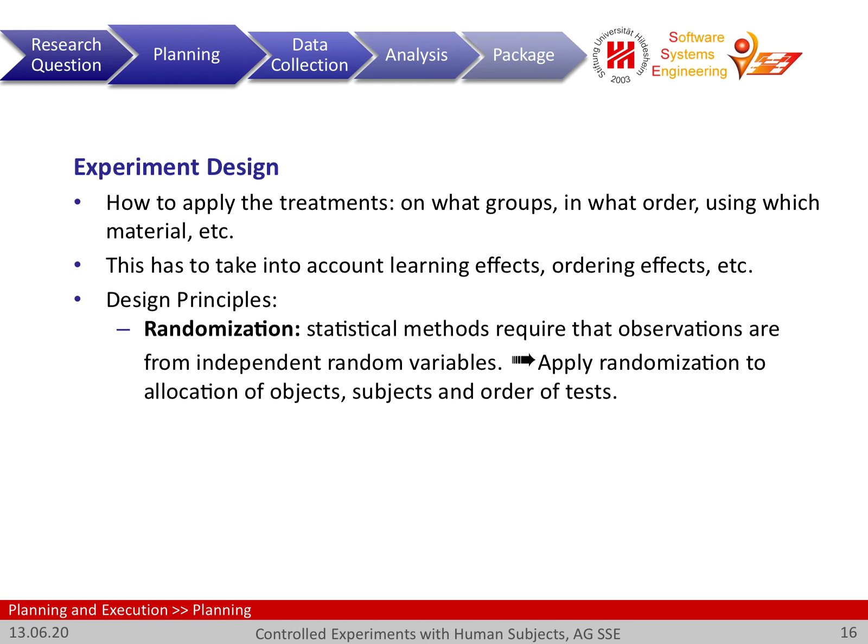Certain design principles need to be taken into account during experimental design. A very common principle is so-called randomization. That means statistical methods require that observations are from independent random variables, and we try to enforce that by randomizing the allocation of subjects and the order of tests. You may have heard about this from medical or drug testing, where people are randomly allocated whether they get a treatment or not — this is exactly to create these independent random variables.